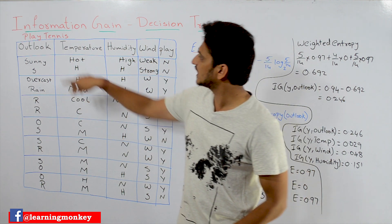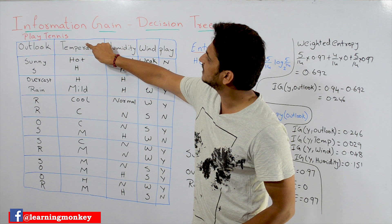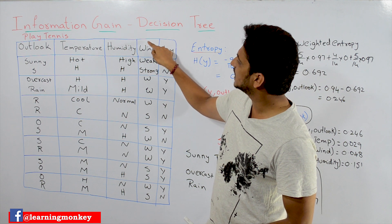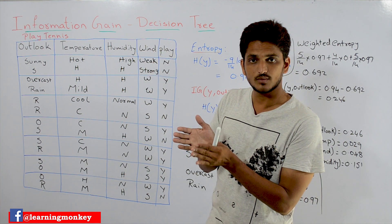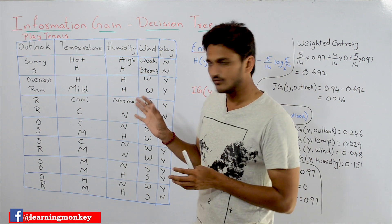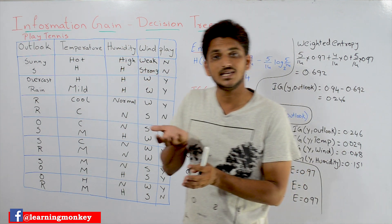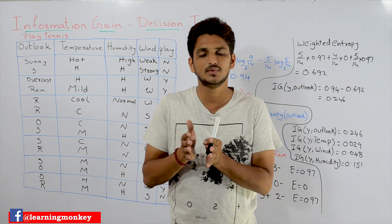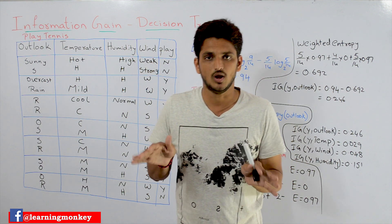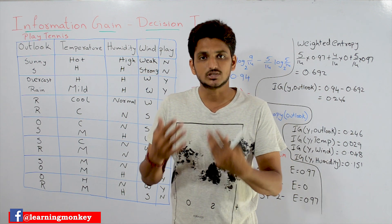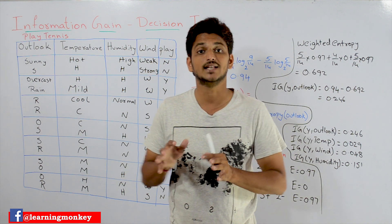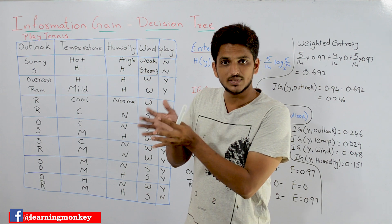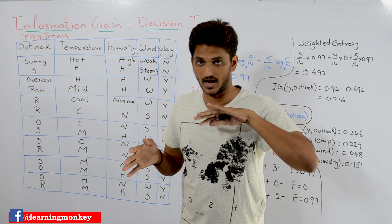What we do here is we will calculate information gain for outlook, for temperature, for humidity, and for wind — for all the columns. Out of these 4 columns, whichever column has the highest information gain value, that column will be taken into consideration as the best column. First, we will understand how to calculate information gain. At the end of the class, we will discuss why the highest information gain value column is taken as the best column.